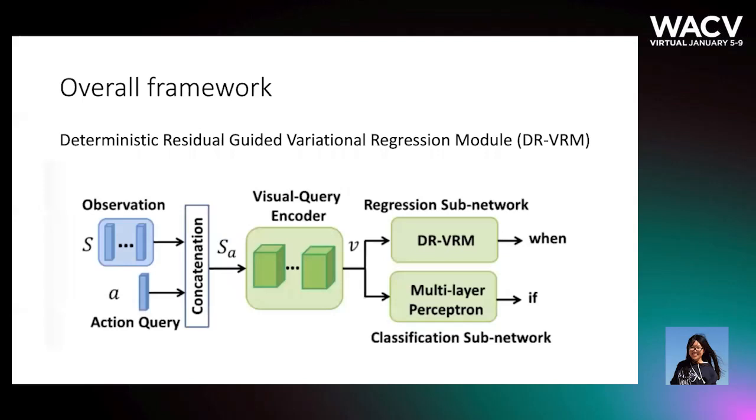To do this task, we use a new overall framework. Basically, we take both the observation and the action query as input. We first repeat this action query and concatenate with the observation. After that, the concatenation is fed to a visual query encoder. This encoder is a temporal convolutional network.